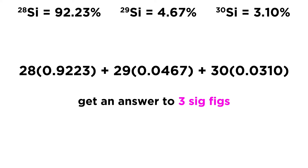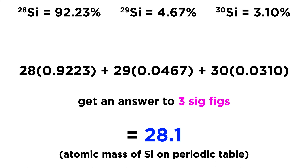Let's also be clear that our answer should have 3 significant figures, because these values have 4 sig figs, 3 sig figs, and 3 sig figs respectively — so that limits our answer to 3 sig figs. Plugging all of that into a calculator, we get 28.1. That is the average atomic mass of silicon found on the periodic table — meaning if we took a sample of silicon atoms, added all their masses, and divided by the number of atoms, we'd get 28.1 atomic mass units.